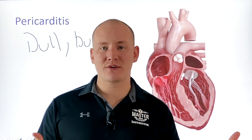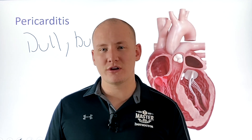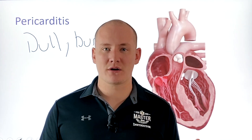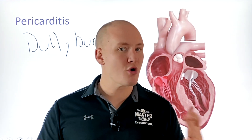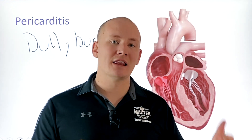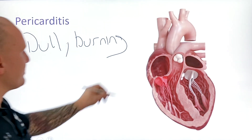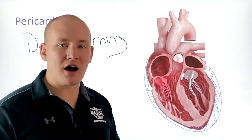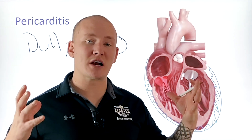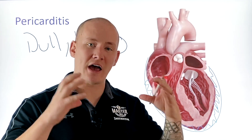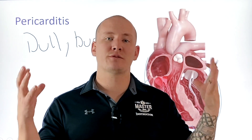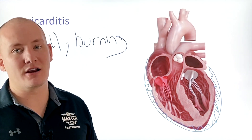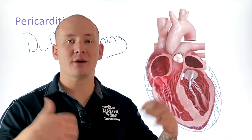ECG changes in pericarditis are quite different from those in myocardial infarction. The key finding to look for is PR depression, and when that PR depression is global — seen throughout the entire ECG — it is suggestive of pericarditis. Pericarditis is generally not life-threatening on its own, but if fluid accumulates in the pericardium, a pericardial effusion can develop. If the effusion grows large enough, it can cause cardiac tamponade — excessive pressure in the pericardial sac that prevents the ventricles from expanding and contracting normally.